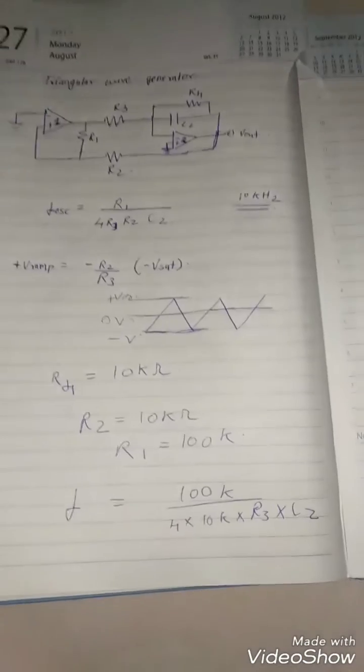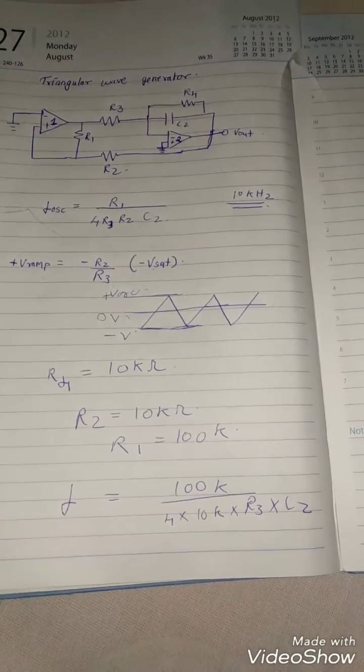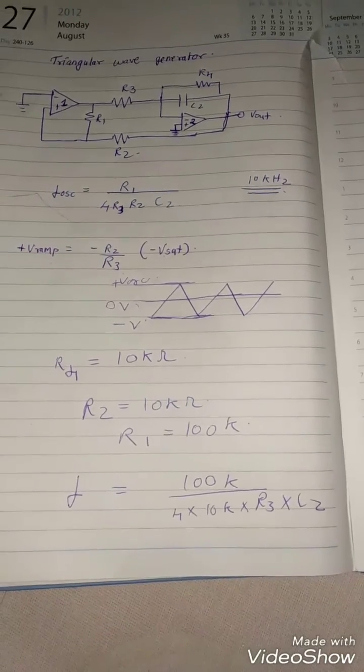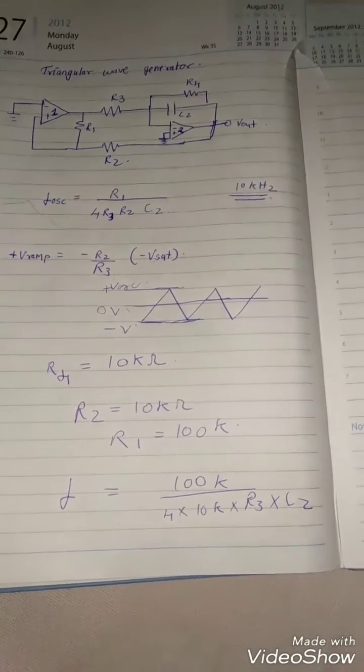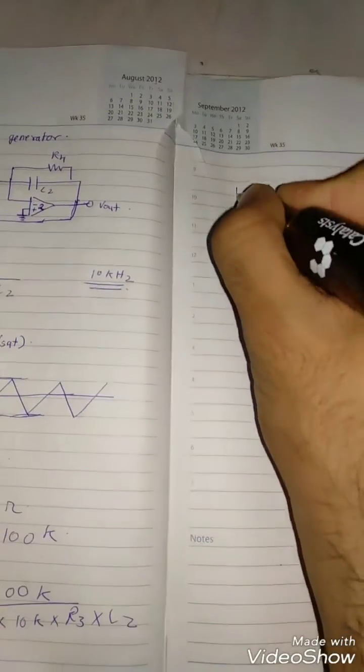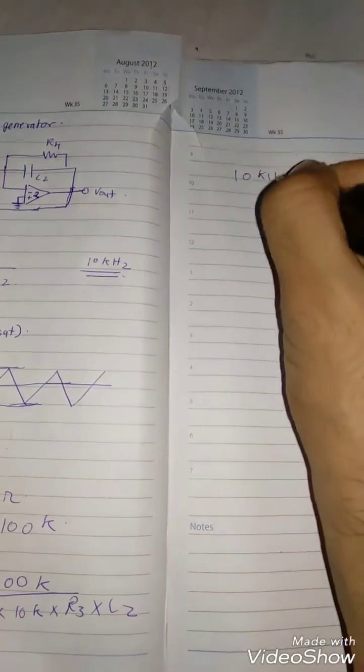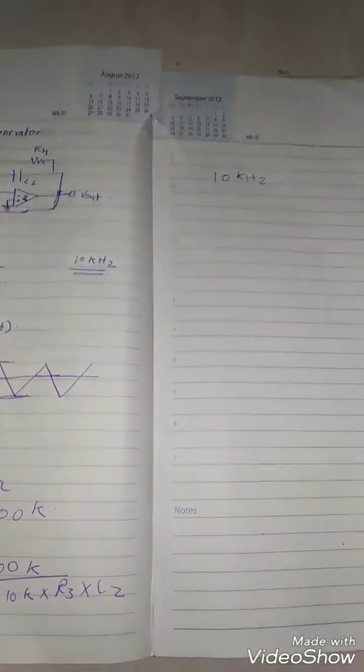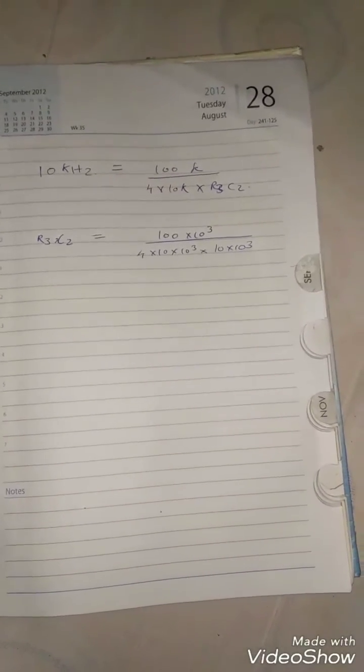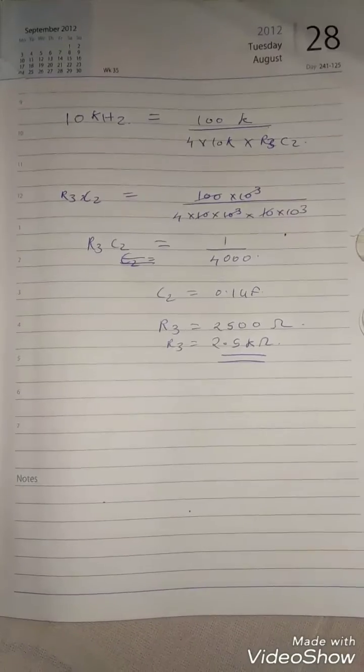So now we have just 2 unknowns R3 and C2. We can solve it and find out what is the answer. So our frequency is 10 KHz. So for this we get the following equation. So this is the equation that we get and we solve it further to get.